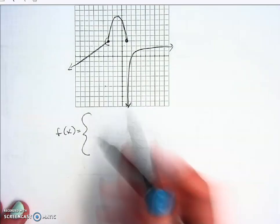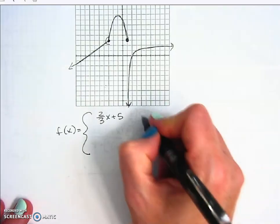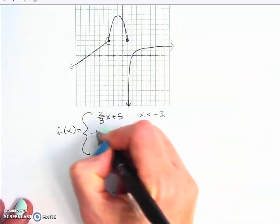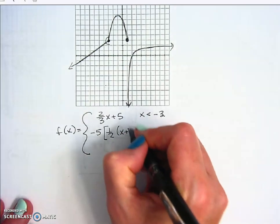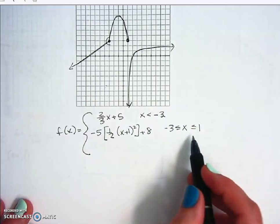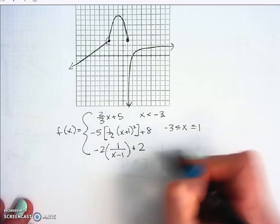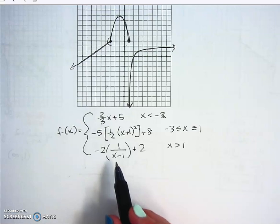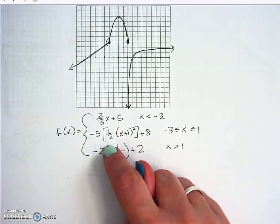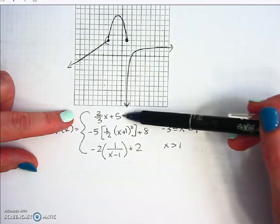The left piece goes on top, the middle piece in the middle, the right piece at the bottom. On top: two-thirds x plus five, with domain x is less than negative three. In the middle: negative five times one-half times (x plus one) squared plus eight, with the domain inequality for negative three to one with brackets. Notice we use function notation — not y equals — and inequality form for the domains.